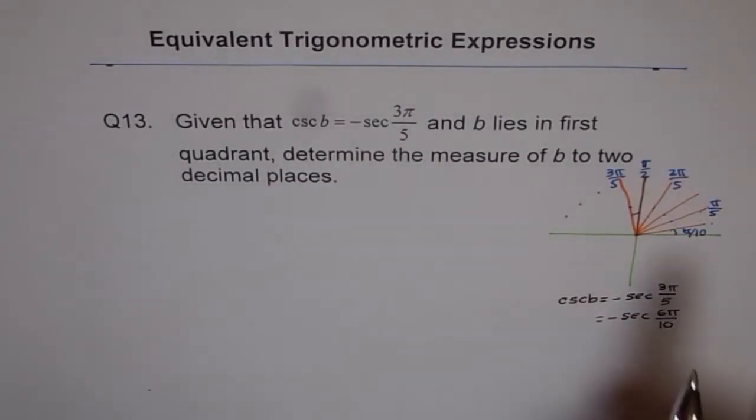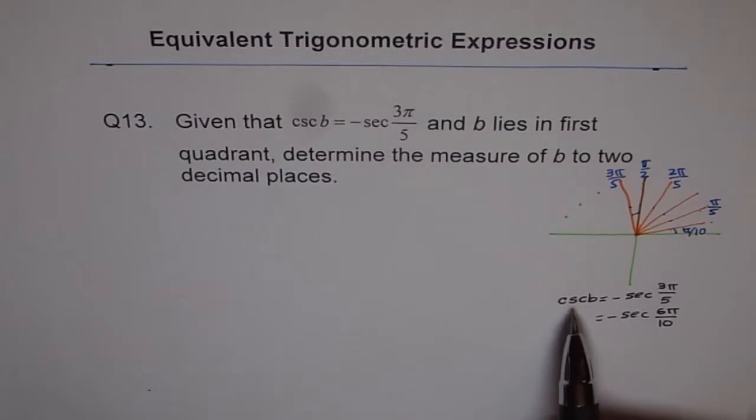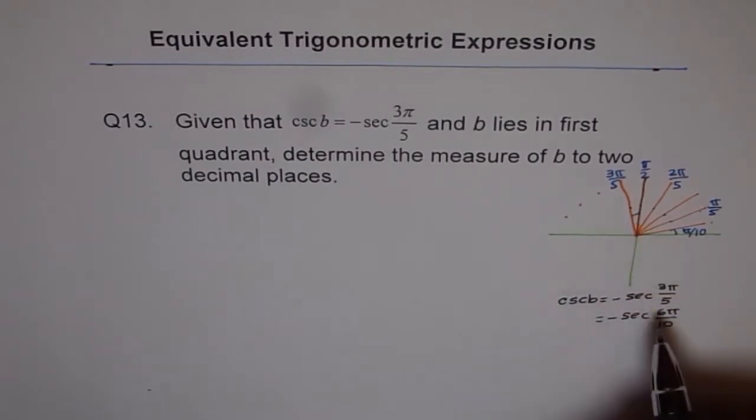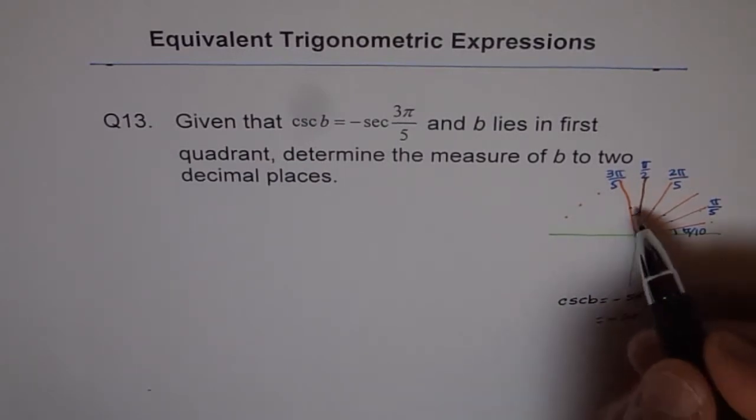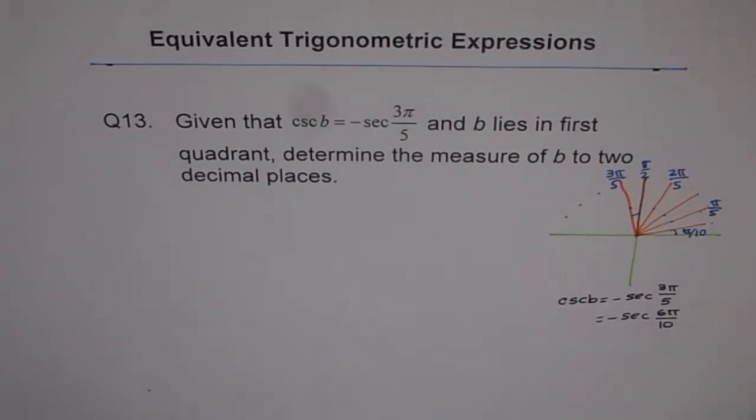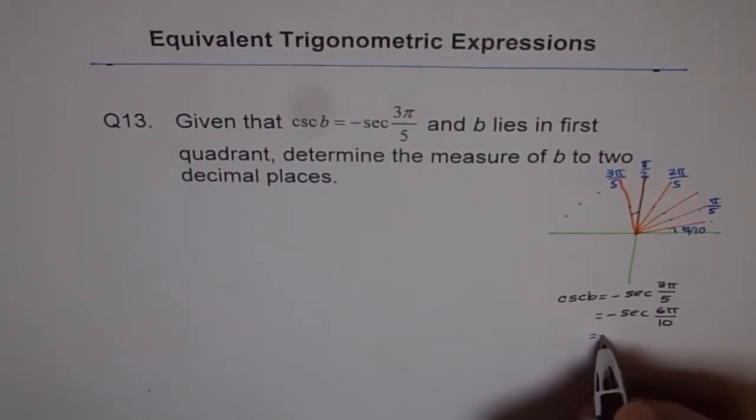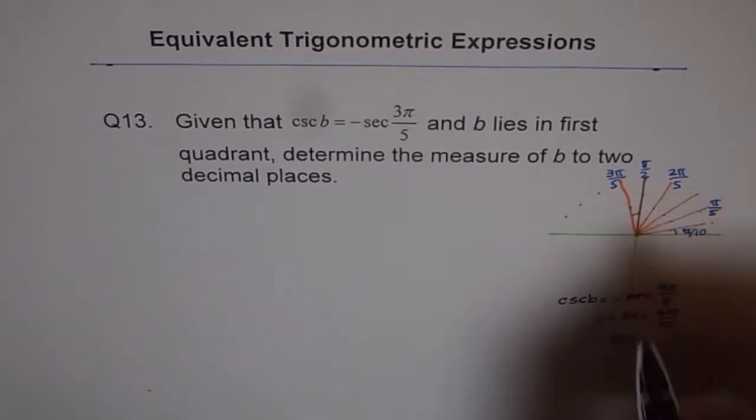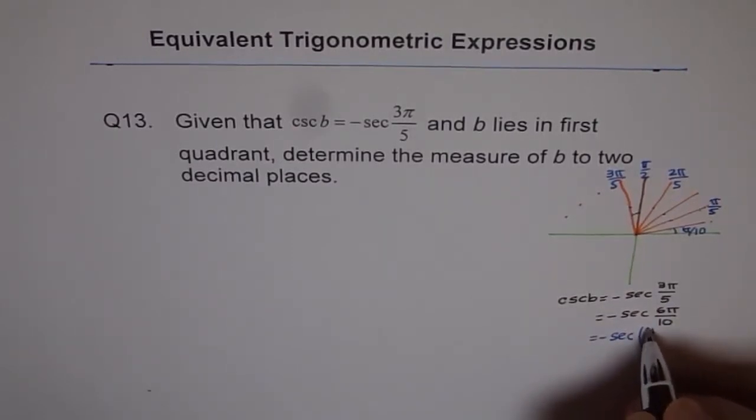Now, since it is a co-function identity, we are changing secant into cosecant. It is a co-function identity. So it should be written in terms of π/2 plus what, correct. Well, so we can write this as minus secant. You can see from here, it could be written as π/2 plus π/10.